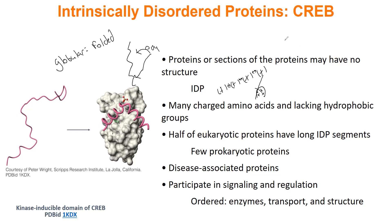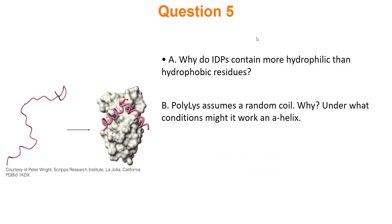Here are some review questions to make sure you understand IDPs. First: why do IDPs contain more hydrophilic than hydrophobic residues? Because you don't want the hydrophobic collapse — you don't want hydrophobic residues going to the center, which would cause folding. Keeping residues hydrophilic lets the protein remain unstructured but still soluble. Also, the term 'random coil' means IDP.